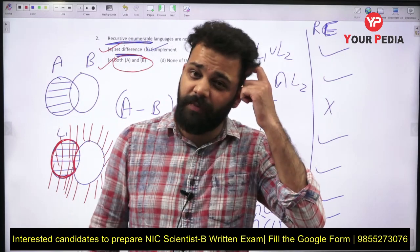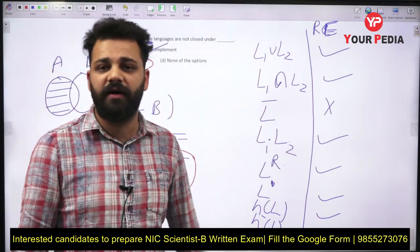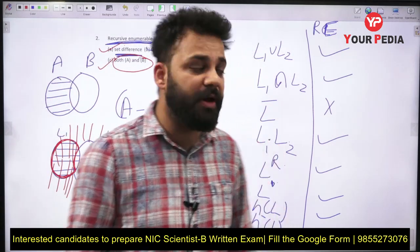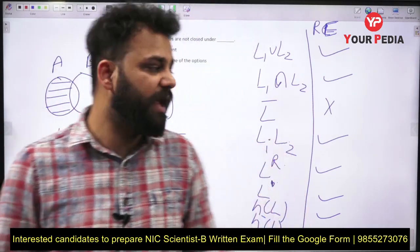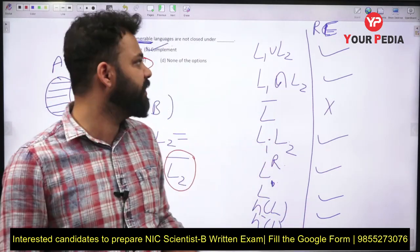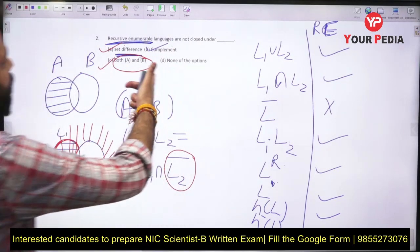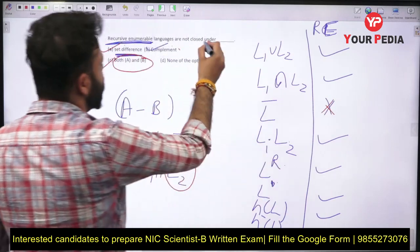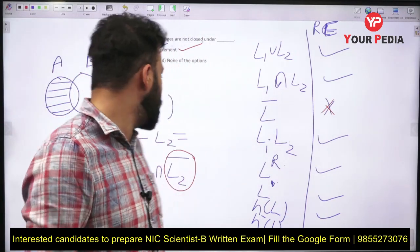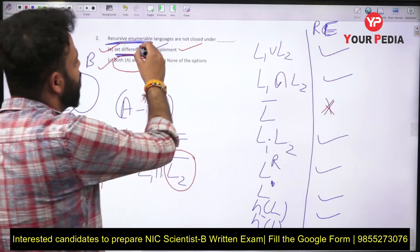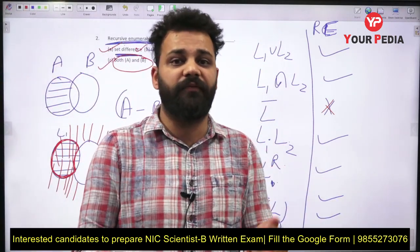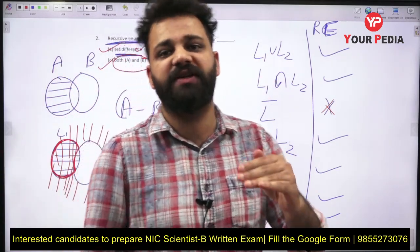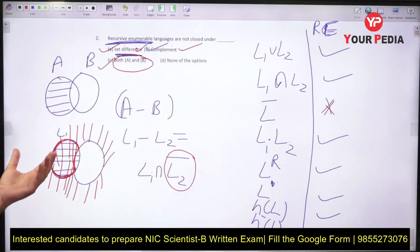These types of questions have a very high probability of being asked in the NIC exam. To solve them you just need to understand and remember the table. RE languages are not closed under complement, and since set difference is calculated using complement, RE is also not closed under set difference. It takes only 10 to 20 seconds if you know how to remember the table — and we will learn how to remember it so you don't forget in the exam.